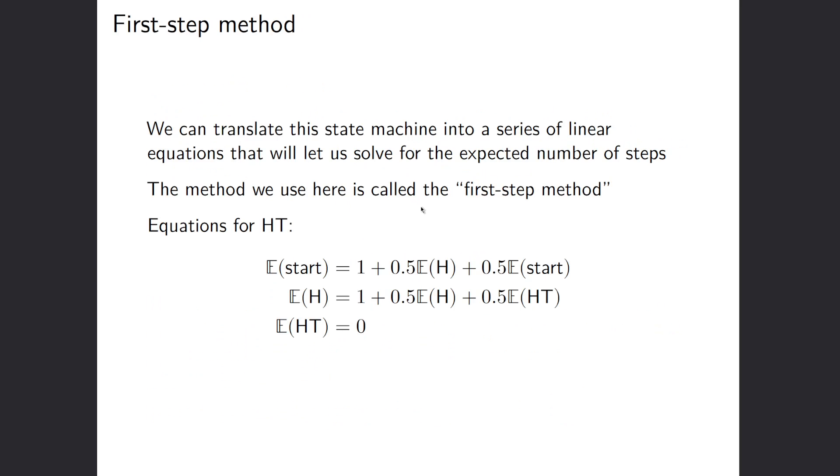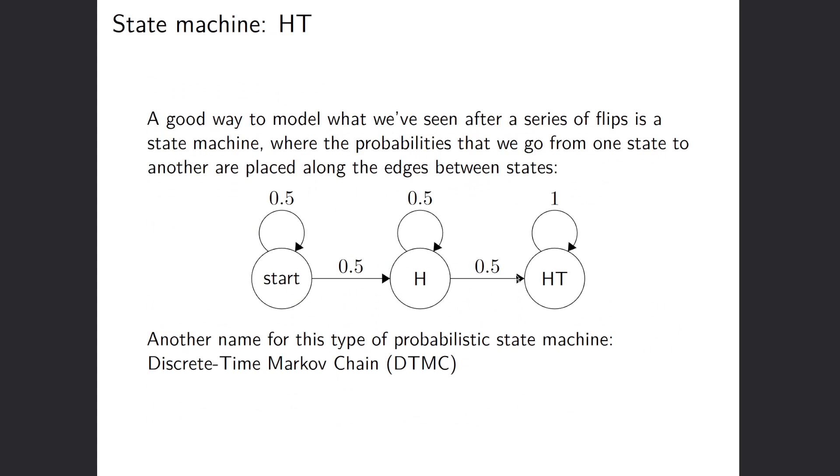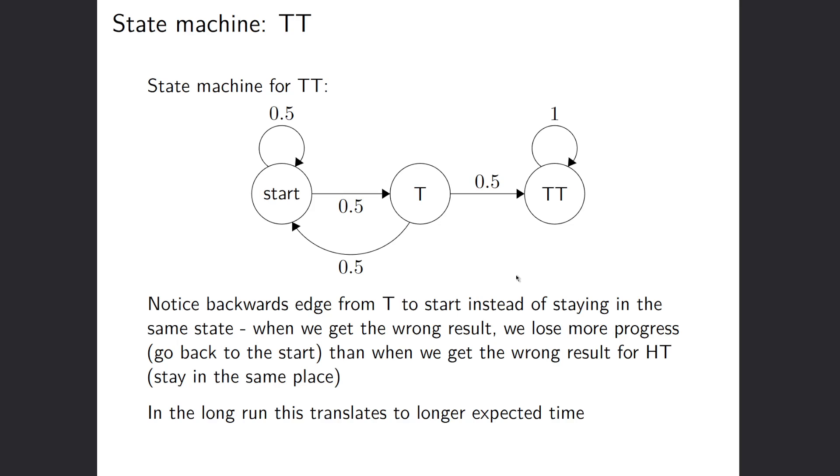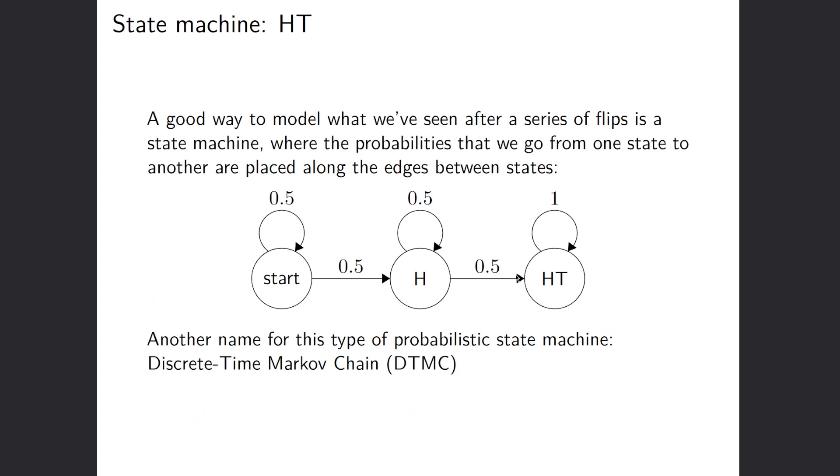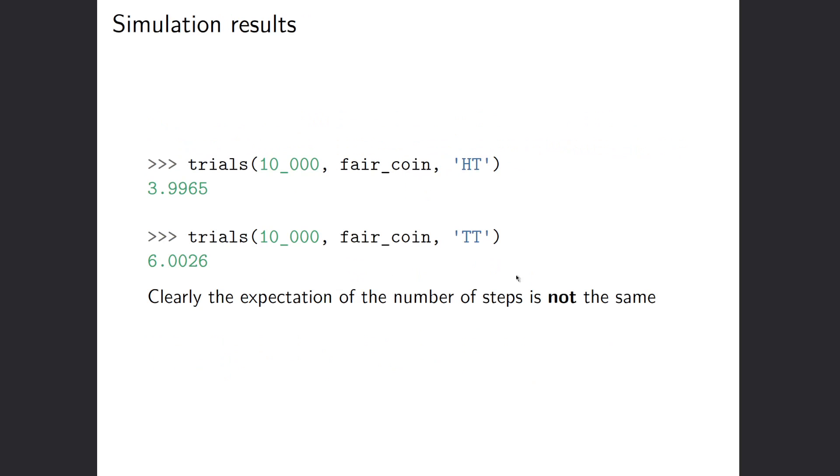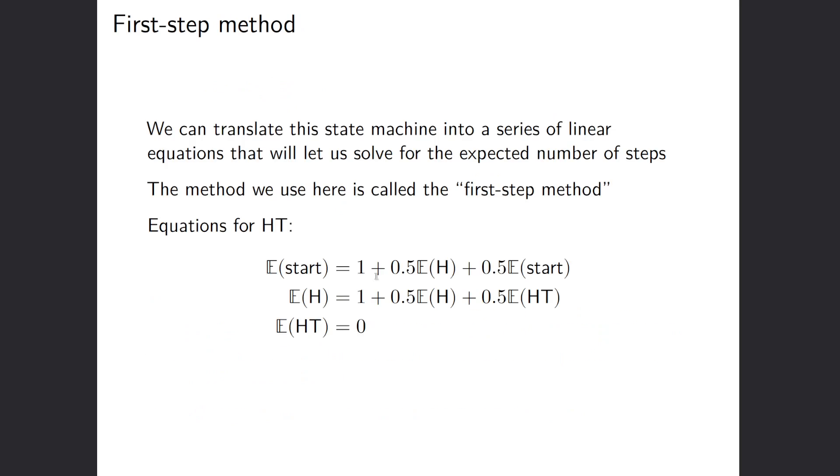So now let's talk about actually solving for the expected amount of time. So here we have this intuitive understanding of why it would take longer for us to see tails tails than heads tails. But now all we have is a comparison between this. We don't actually know what the expected number of steps is unless we want to simulate it. So we don't want to simulate it. We want to find out exactly what it is. We can actually solve a system of linear equations to figure out what the expected number of steps is before we see the desired result.